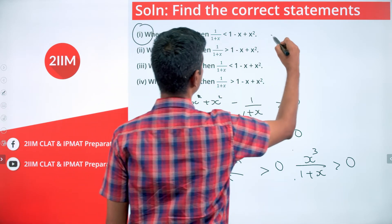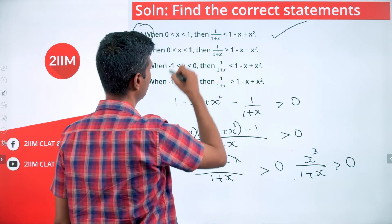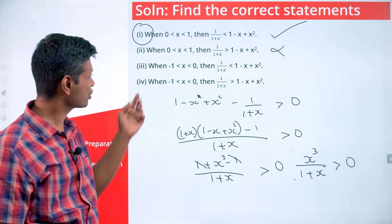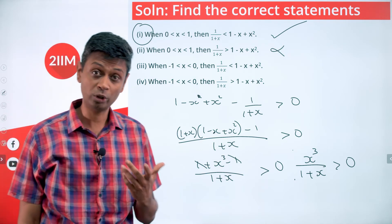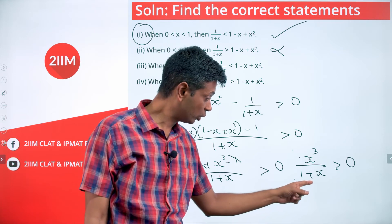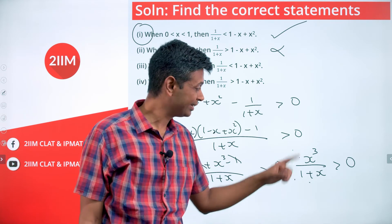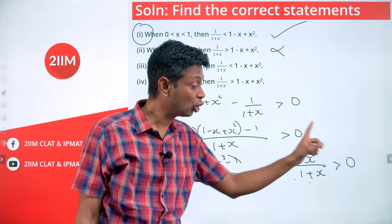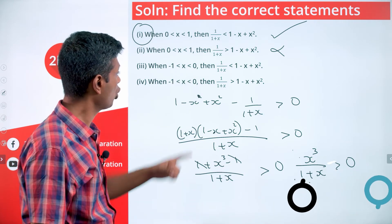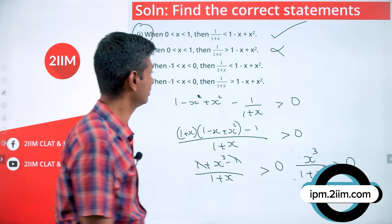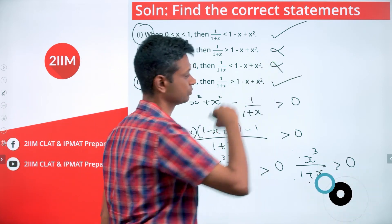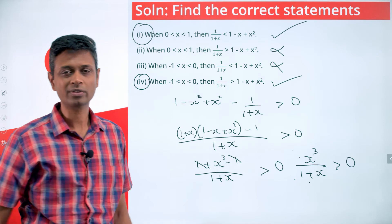Statement 1 being correct obviously means statement 2 is wrong. For the other range, -1 to 0: x³ is going to be negative and (1+x) is going to be positive, so negative divided by positive will not hold good. In the range -1 < x < 0, 1/(1+x) is greater than 1 - x + x², so that statement holds good.